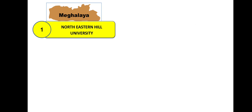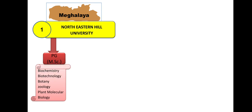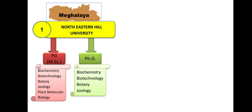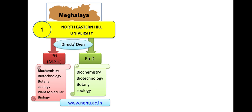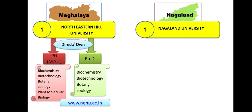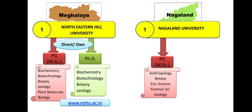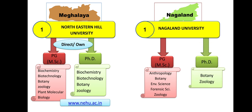Meghalaya: North Eastern Hill University (NEHU) has PG in Biochemistry, Biotechnology, Botany, Zoology, and Plant and Molecular Biology. PhD in Biochemistry, Biotechnology, Botany, and Zoology. Admission is direct or through their own CET. Nagaland: PG is available in Anthropology, Botany, Environmental Science, Forensic Science, and Zoology. PhD in Botany and Zoology. Admission through their own CET. Websites are provided.